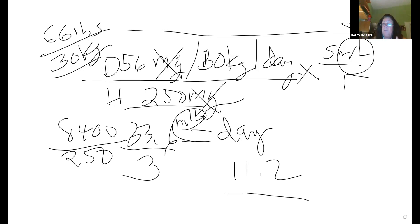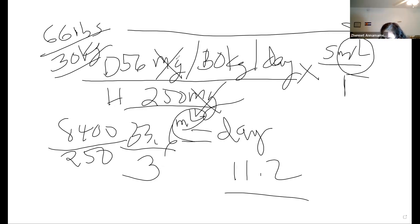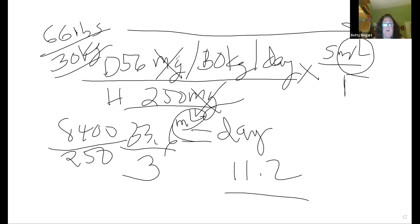Remember: go back to the problem. Do they want the answer to the tenth? They want a whole number — be careful, sometimes it looks like a tenth but it's a whole number. A student rechecks and initially got 112 — they had an extra zero — then confirmed: 8,400 divided by 250 equals 33.6, divided by 3 equals 11.2.